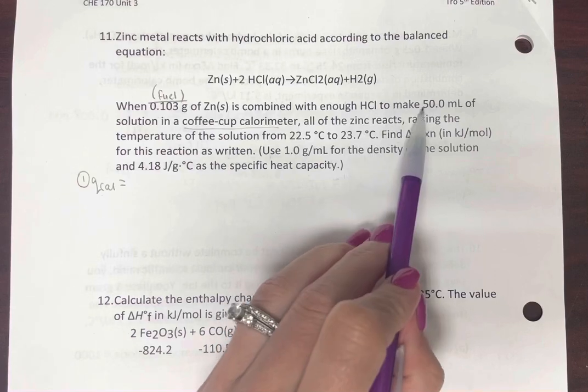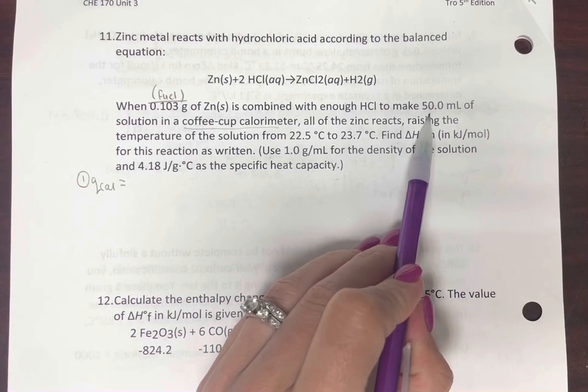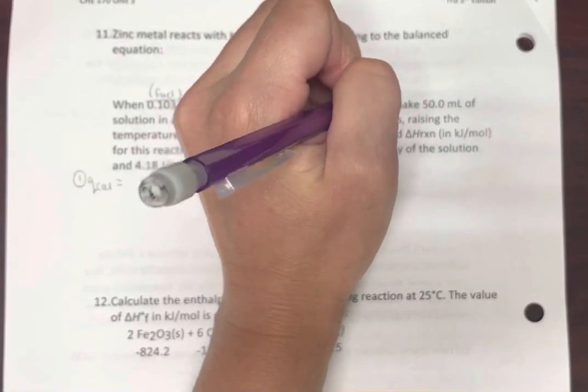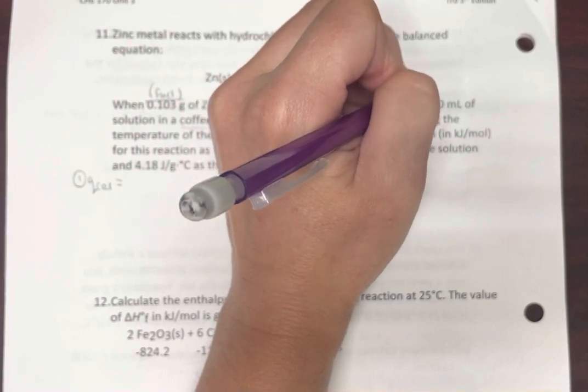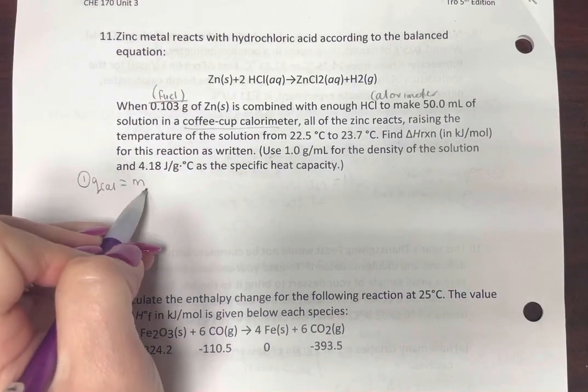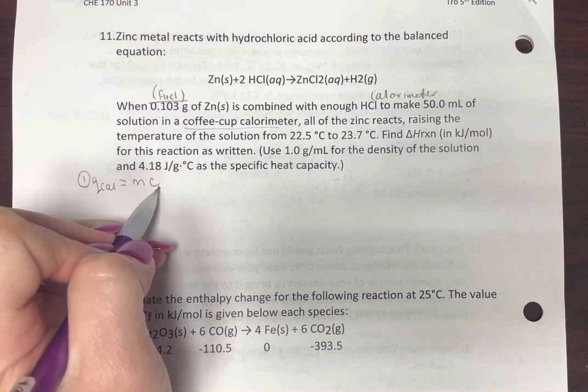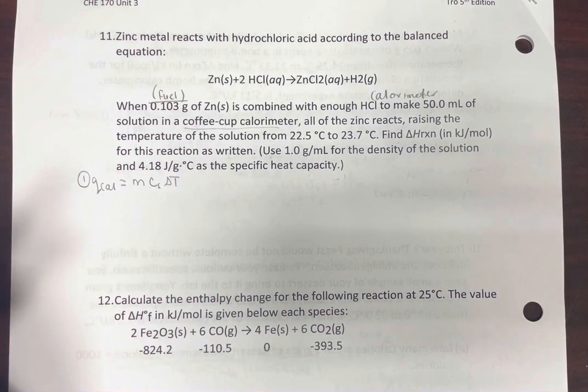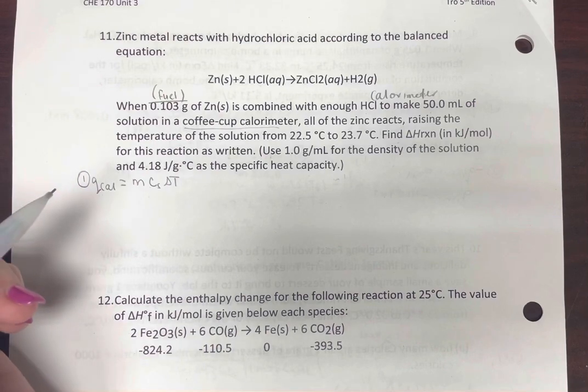So the solution in the coffee cup here is HCl. This is going to be our calorimeter. Here we're going to be needing mass of the calorimeter, specific heat, and delta T in a coffee cup.